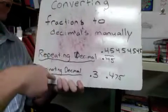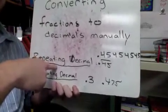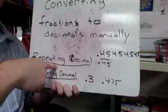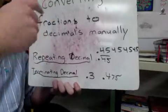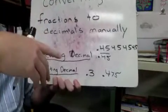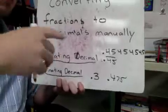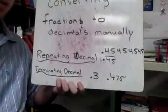We're going to see a variety of different decimal types — terminating ones that stop, repeating ones, and also some that just keep going on forever without any kind of pattern.